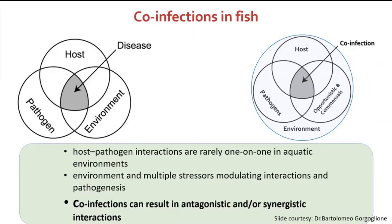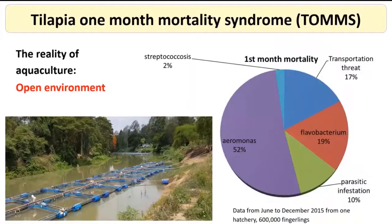When animals are suppressed or made sick by the first, primary pathogen, opportunistic organisms move in and worsen the disease. Environmental conditions and multiple stressors moderate the interactions and pathogenesis of the pathogens.